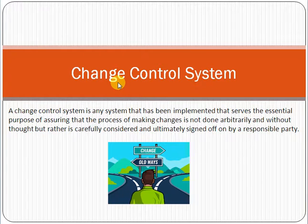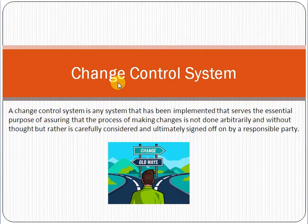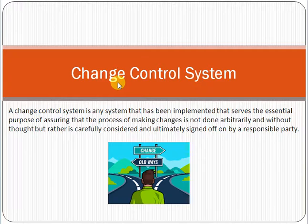Now coming towards the topic: change control system means how changes will be implemented at production. Production means how it will be delivered to the customer or client — the point at which real users start using the system. The change control system basically serves the essential purpose of assuring that the process of making changes is not done arbitrarily and without any thought.